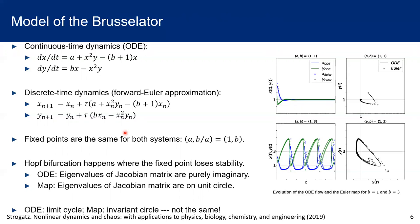More specifically, for ODE, the eigenvalues of Jacobian matrix are purely imaginary when the Hopf bifurcation happens. And for the map, the same eigenvalues of Jacobian matrix will be located on a unit circle when the Hopf bifurcation happens.